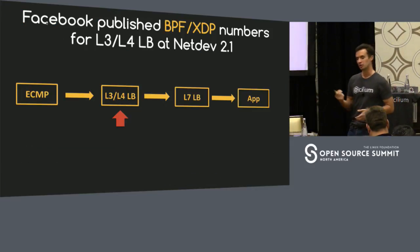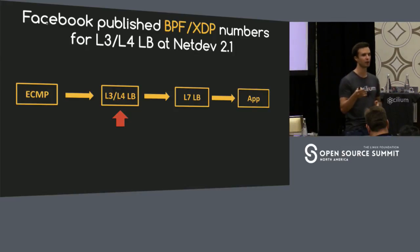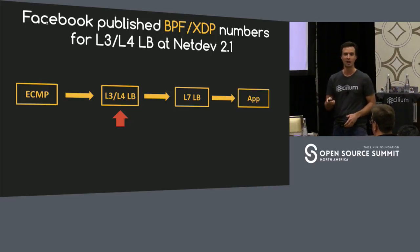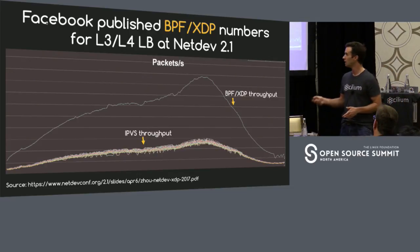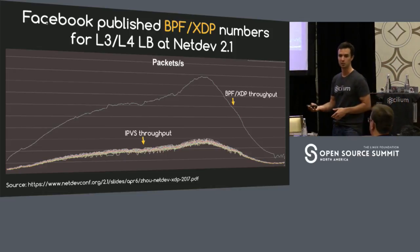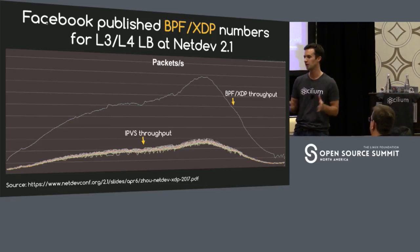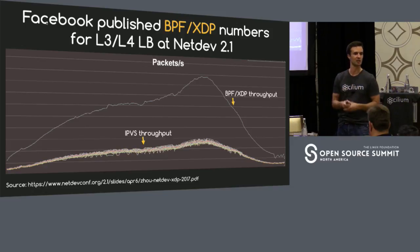The second example is that Facebook published numbers at NetDev this year and announced they're switching their layer 3/layer 4 load balancers over from IPVS — a Linux load balancer technology — to BPF XDP. Between ECMP hardware-based load balancers and the L7 load balancers, they're running an L3/L4 load balancer. The numbers are mind-blowing: the bar below is the IPVS throughput, and the upper bar is the XDP BPF throughput in packets per second — there's almost a 10x improvement. Anybody in the networking field knows that 10x improvements don't come every day.